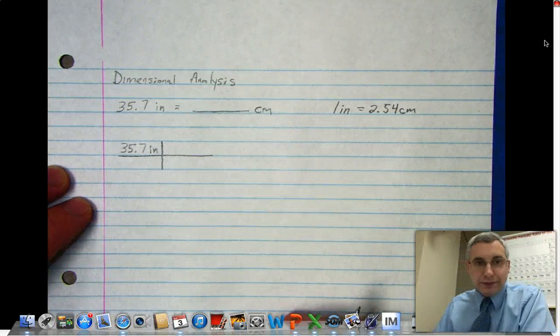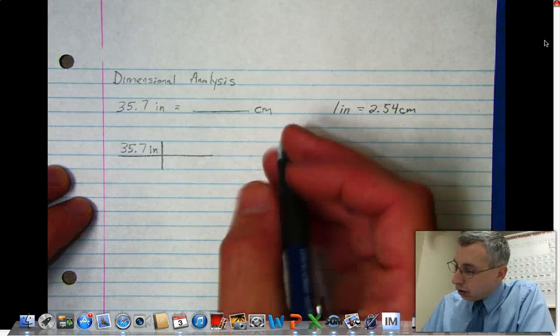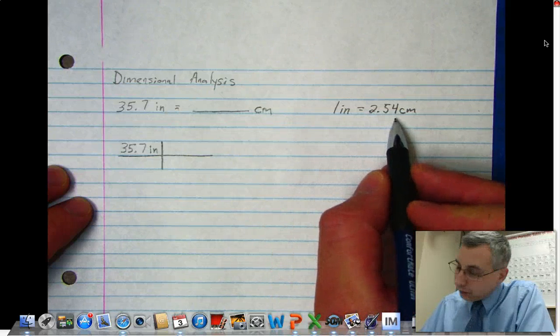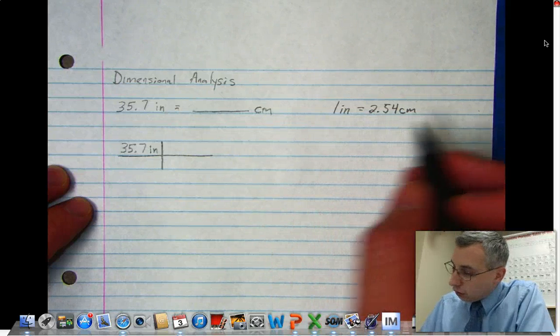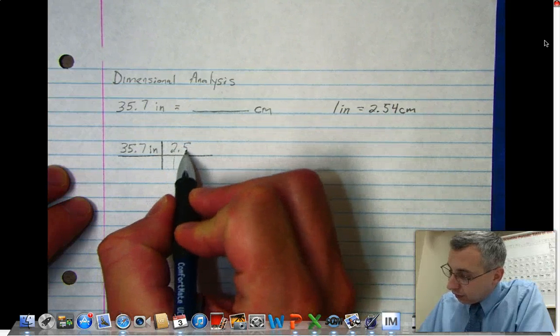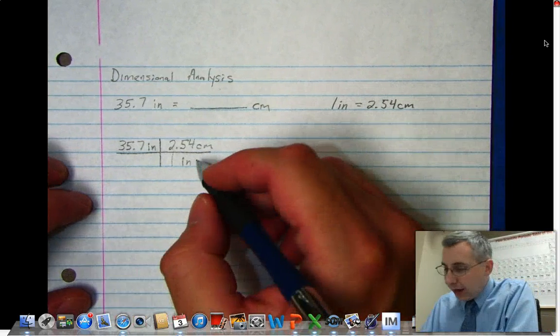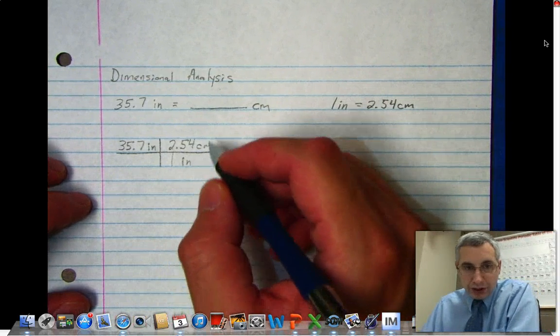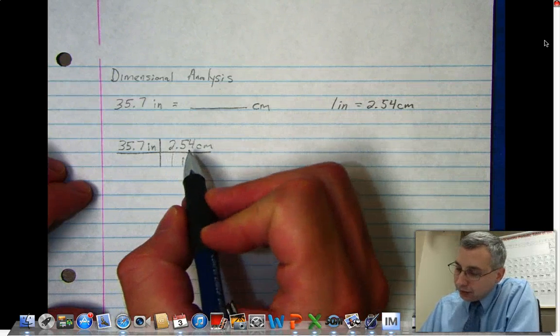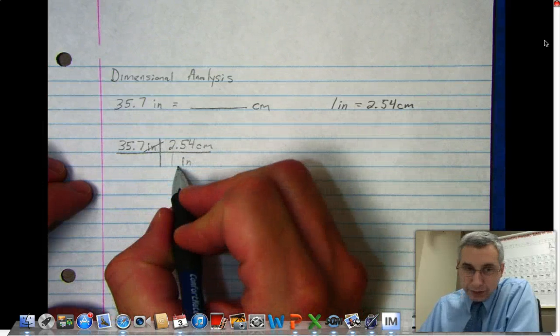As far as your conversion factor, you know that one inch is 2.54 centimeters, so I have to put one inch on the bottom and then above it I put 2.54 centimeters. You might be wondering why did one inch go on the bottom? Well, it has to be on the bottom because my inches have to cancel.